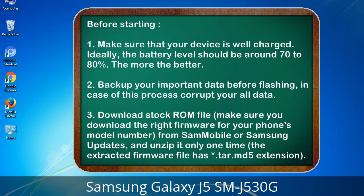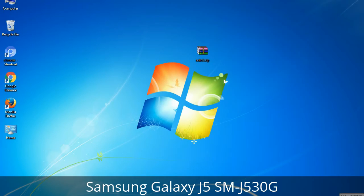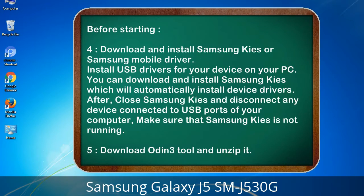3. Download the stock ROM file. Make sure you download the right firmware for your phone's model number from Sammobile or Samsung Updates, and unzip it only one time. The extracted firmware file has a *.tar.md5 extension.